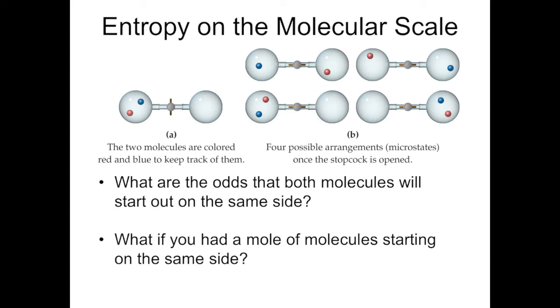In this case, example A has two molecules colored red and blue. If we open up the valve between the two bulbs, the molecules are free to move between either bulb.